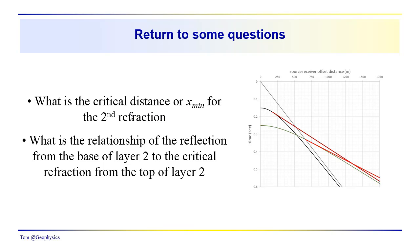A couple questions we left you with: what is the critical distance, or x-min, for the second refraction? That would be this distance here. And what is the relationship of the reflection from the base of layer two to the critical refraction from the top of layer two? We have this reflection event here in green, and then the critical refraction from the top of the layer, and what is that relationship?